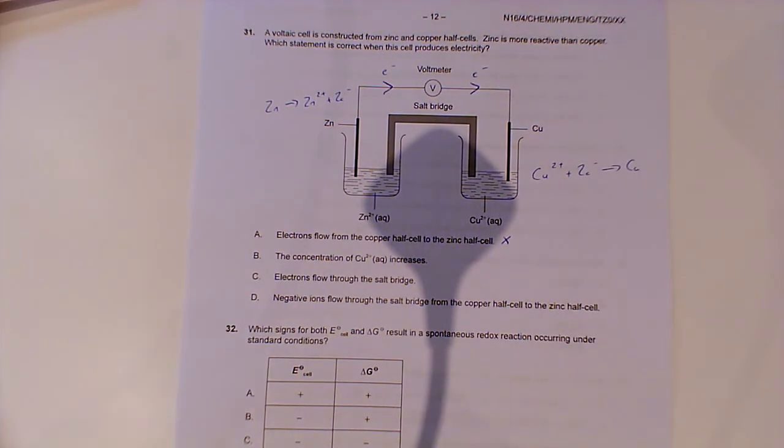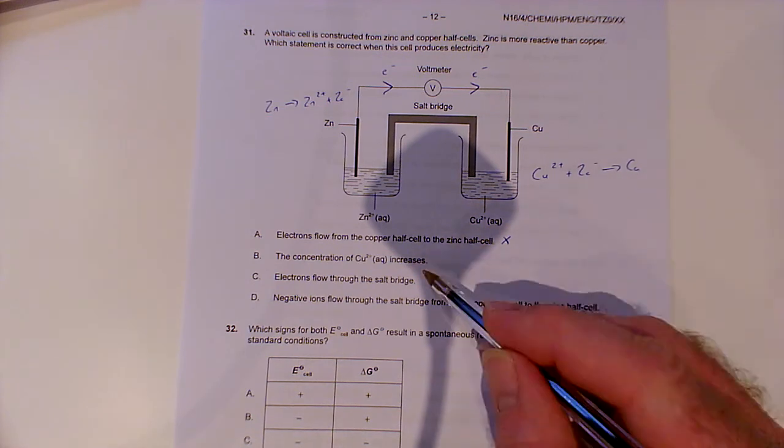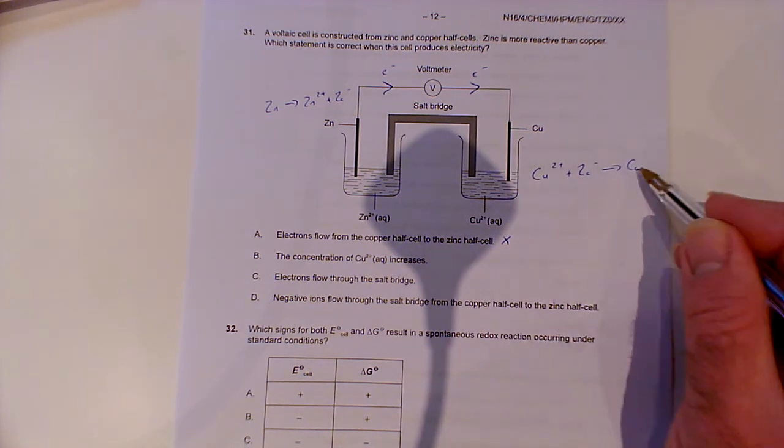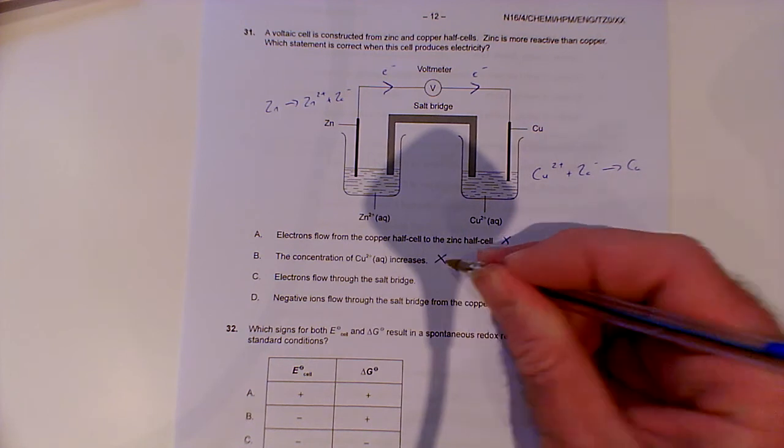The concentration of copper 2+ increases. Well, no, it's going to decrease because the copper 2+ ions are gaining those electrons and becoming copper atoms. So it's going to decrease.